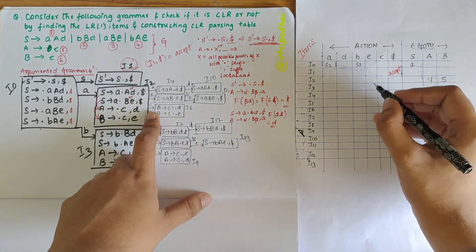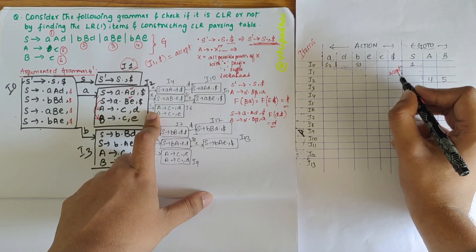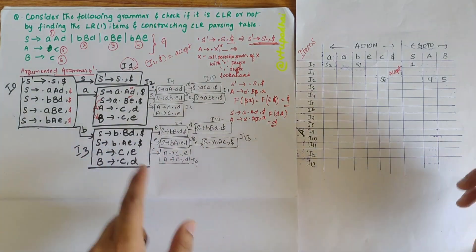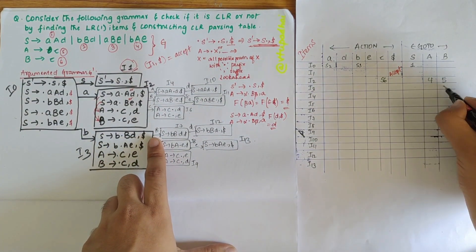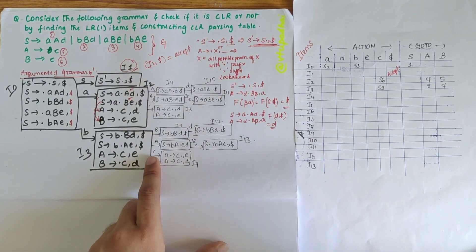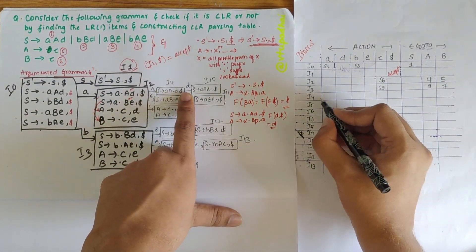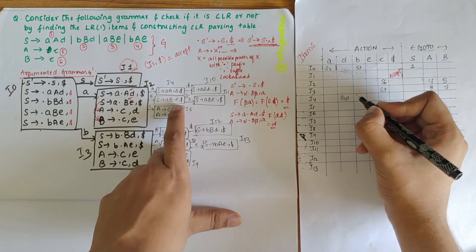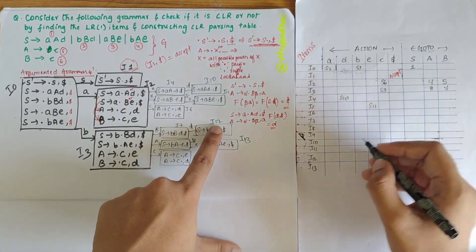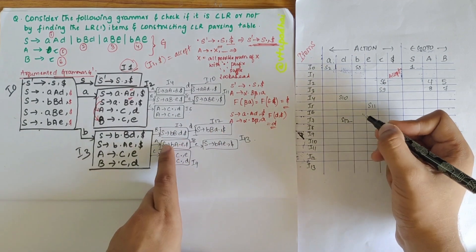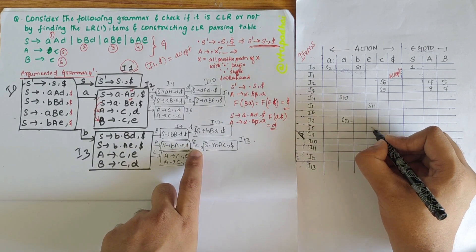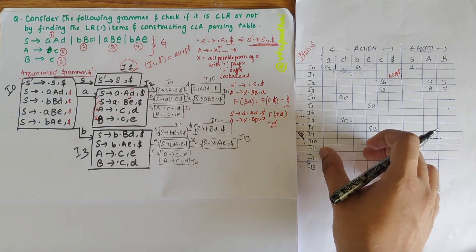For I2: over capital A I have goto to I4, over capital B goto to I5, and over small c (a terminal) I write S6. For I3: over B goto 7, over A goto 8, over c write S9. For I4: over d write S10. For I5: over e write S11. For I7: over d write S12. For I8: over e write S13. I am done with writing the shift and goto entries.